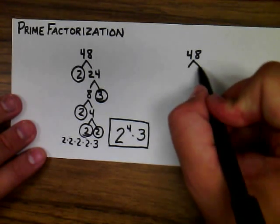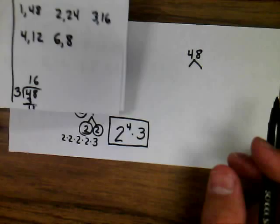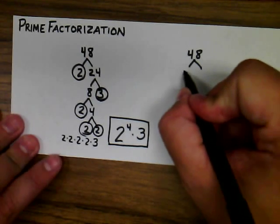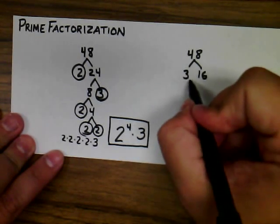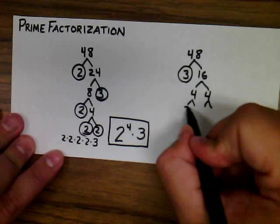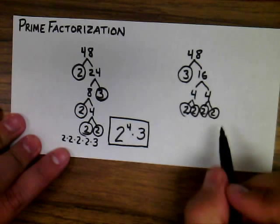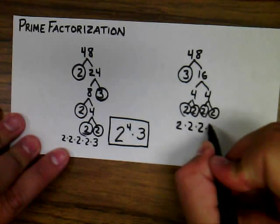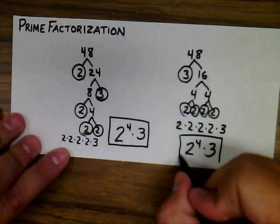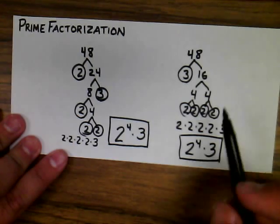That's not the only way you could break down 48 — there were 5 different factor pairs for 48. Using a different factor pair, 3 and 16: the 3 is prime, and 16 breaks down into 4 times 4, which are still composite. When I'm done, I have the exact same prime factors: 2 times 2 times 2 times 2 times 3, written in exponential form as 2 to the 4th power times 3. So regardless of which factor pair you choose, you're still going to get the exact same answer.